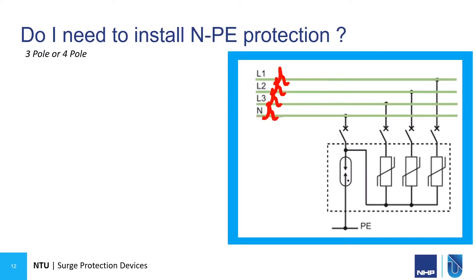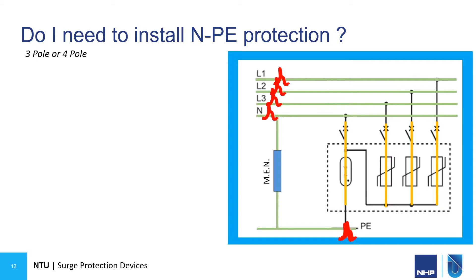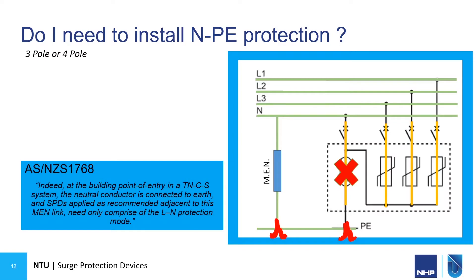Before moving on to the selection guide, I wanted to answer the question as to whether we always need to install a neutral-earth pole on our SPDs. Under surge conditions, our SPDs modify their impedance almost to zero, providing a path for that surge energy down to earth. However, if we're close to an MEN link, we already have a path from the neutral to the earth, and hence under surge conditions that fourth pole is redundant. That's also backed up by AS/NZS 1768. So in that case, we only need to install a three-pole device.